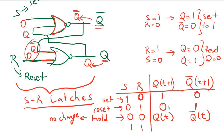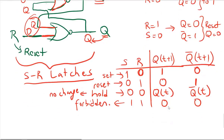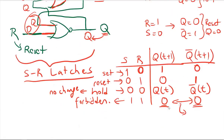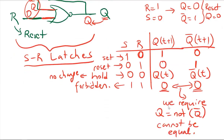The S=1, R=1 state: although we can drive the latch with S=1 and R=1 at the same time, we call this the forbidden state. You cannot drive this latch with both S and R equal to 1 — you either set or reset your latch, not both at the same time. There is no meaning for this state. If you put 1 and 1, you will have Q=0 and Q-NOT=0, which violates the requirement that Q must equal NOT of Q-NOT.